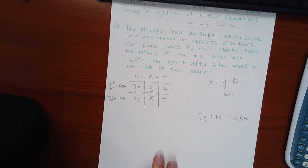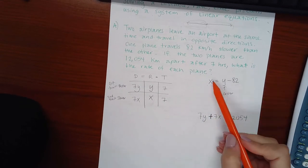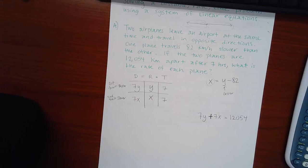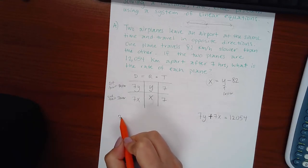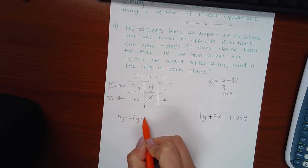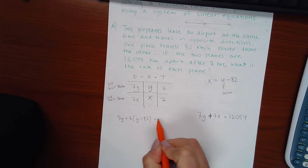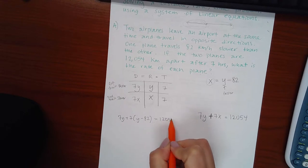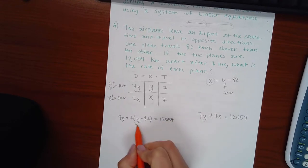Now, I typically like to use the elimination method, but you notice x is already all by itself, so it lends itself to the method of substitution. So I'm going to take my bottom equation, and instead of x, I'm going to use y minus 82.